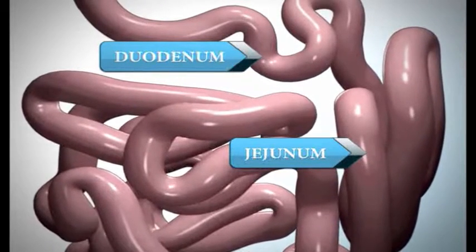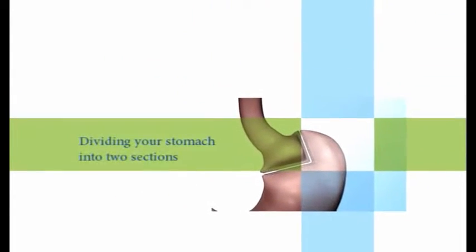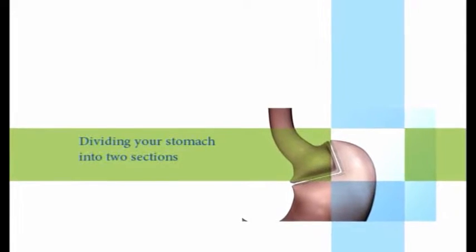The steps in the Roux-en-Y gastric bypass involve dividing your stomach into two sections to create a smaller stomach pouch, dividing your jejunum into two sections, creating a Y connection between both parts of your jejunum, and creating a connection between your stomach pouch and jejunum.